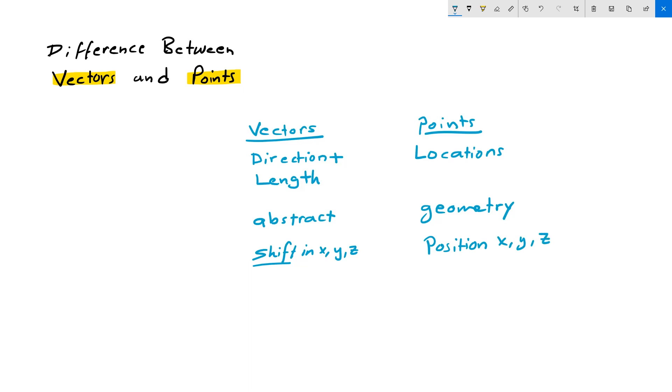We name vectors with lowercase letters, while we name points as uppercase letters. We enclose the three components of vectors between angle brackets. We enclose the points between parentheses.